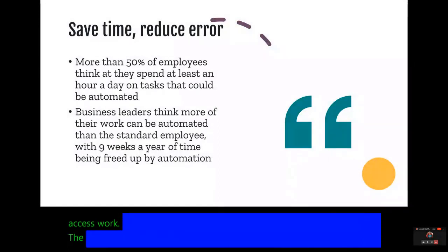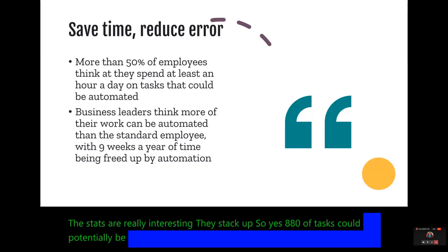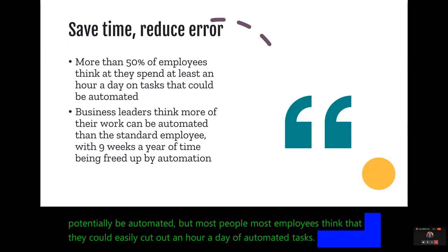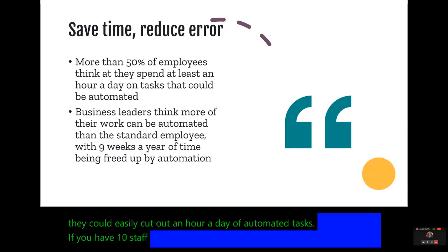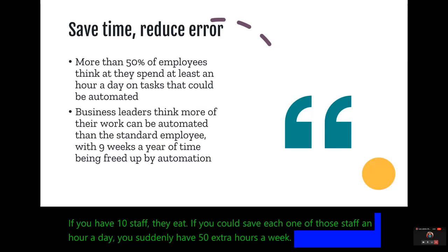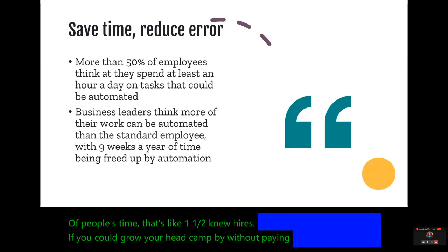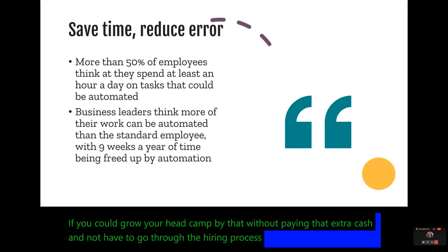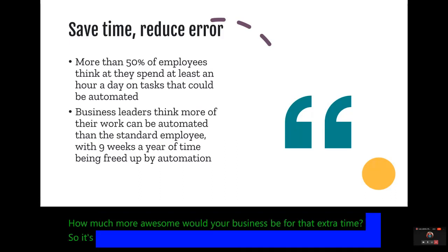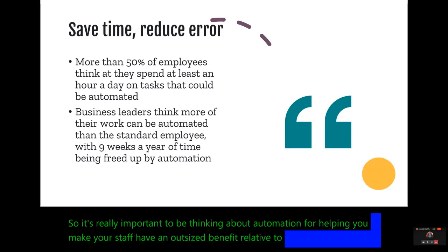The stats really stack up: 80% of tasks could potentially be automated, but most employees think they could easily cut out an hour a day of automated tasks. If you have 10 staff and could save each one an hour a day, you suddenly have 50 extra hours a week — that's like one and a half new hires. If you could grow your headcount by that without paying the extra cash and without going through the hiring process, how much more awesome would your business be? So it's really important to be thinking about automation for helping your staff have an outsized benefit relative to their number of hours — and also yourself as a business leader.